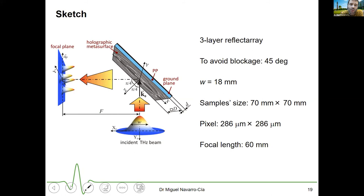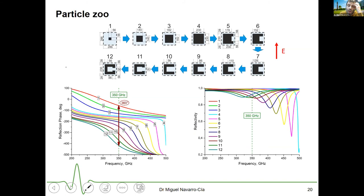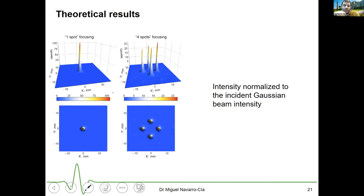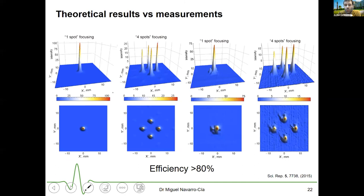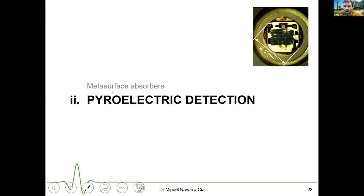We can also use metasurfaces to manipulate beams. We designed a metasurface with a spatially varying complex reflection coefficient to convert a Gaussian beam into four focused spots. We found the particle geometry that provides high reflectivity - ideally unity - and a reflection phase covering 360 degrees, and fabricated this reflect array. The metasurface achieved an efficiency above 80 percent at terahertz frequencies, which was a record at the time.